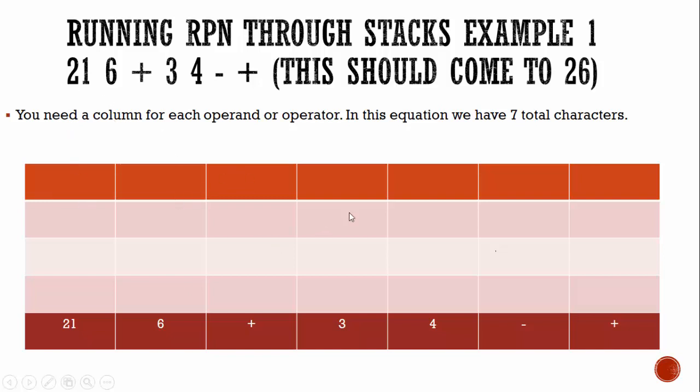So we have seven columns, and all of this represents the same stack. As we move from left to right, all we're doing is updating the stack. This is a visual representation. This first row down here, which shows our RPN equation, normally doesn't show up.